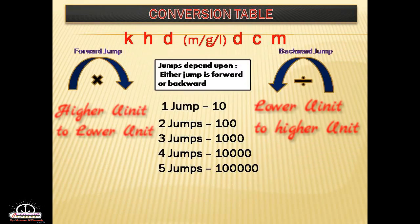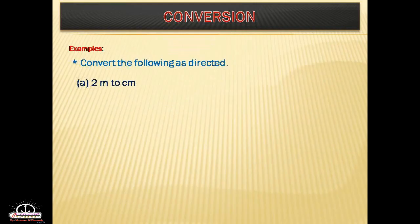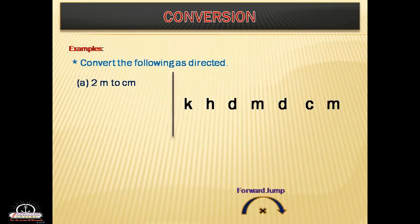Let's go to the examples. Convert 2 meters to centimeters. Here we are converting meter to centimeter, which means we are jumping two places forward. Two jumps means you have to multiply 2 by 100. The final answer is 200 centimeters.